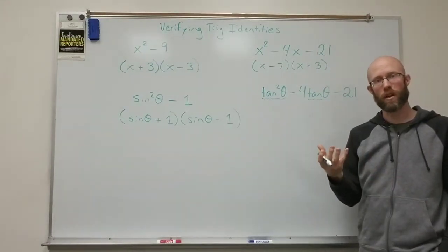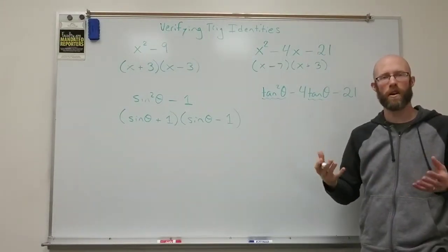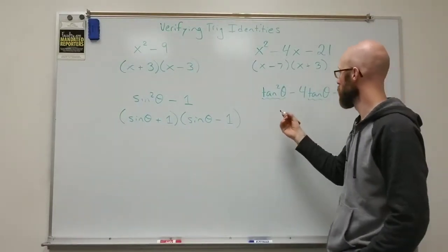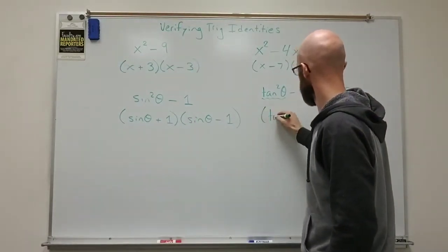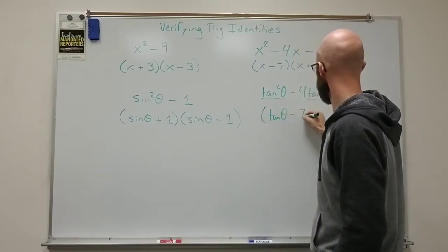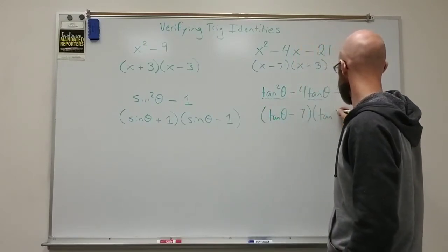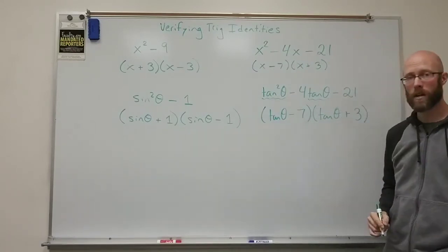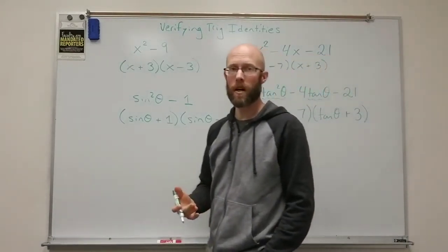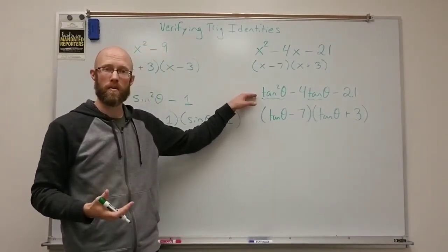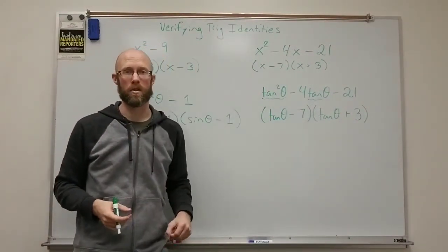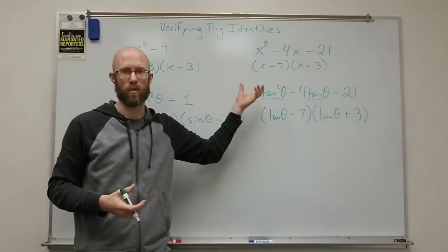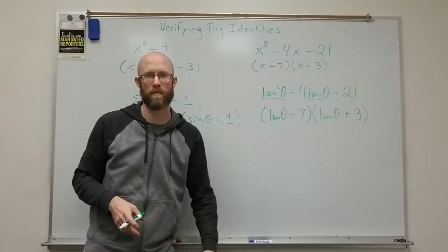it'd be tangent of theta minus seven and tangent of theta plus three. So the tangent, the trig function becomes kind of your variable term in the factoring. So this becomes tangent of theta minus seven and tangent of theta plus three. So factoring can be done with trig expressions in the same way that you would with polynomials, just replacing the variable with that trig expression or with a trig function.